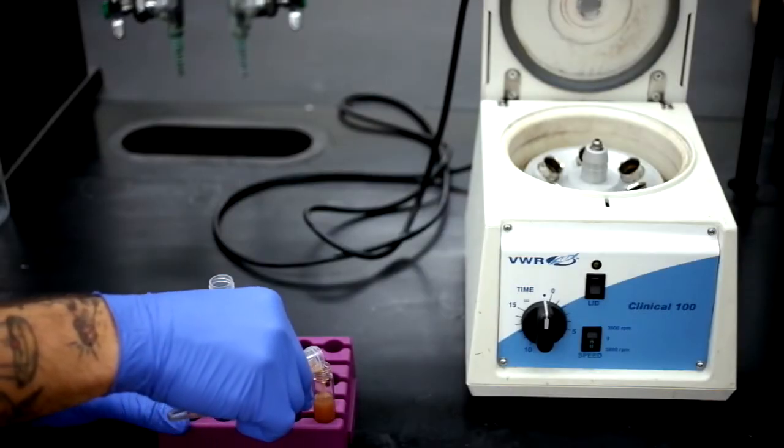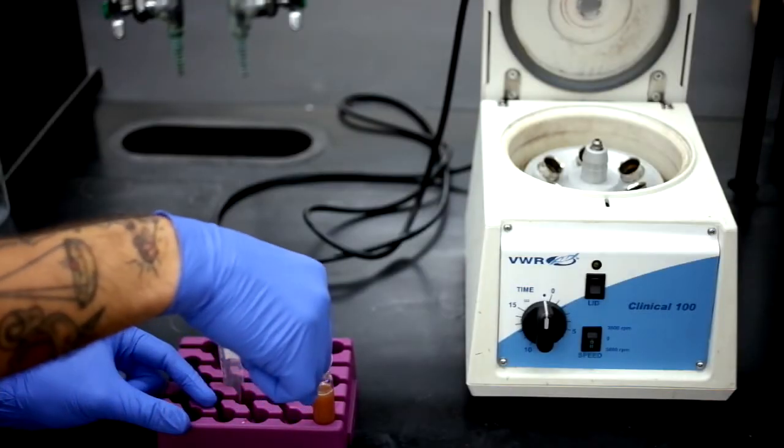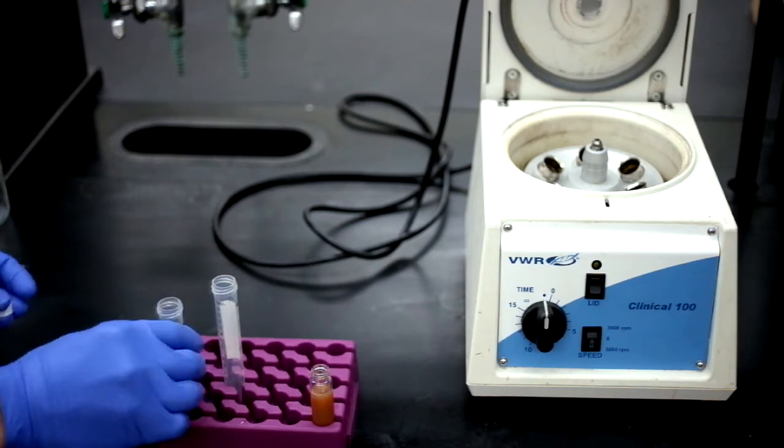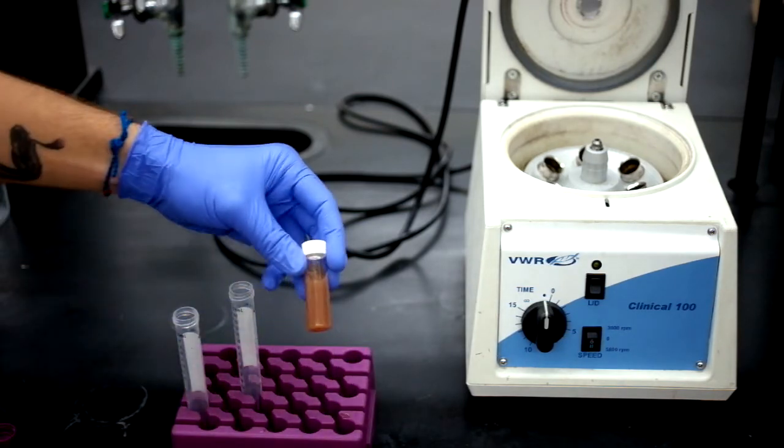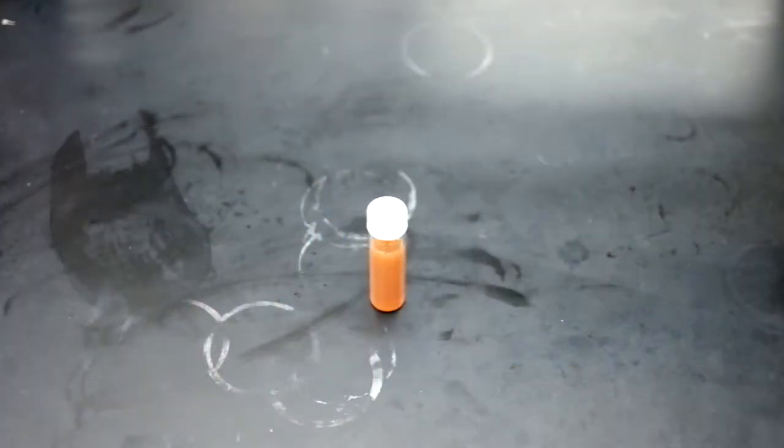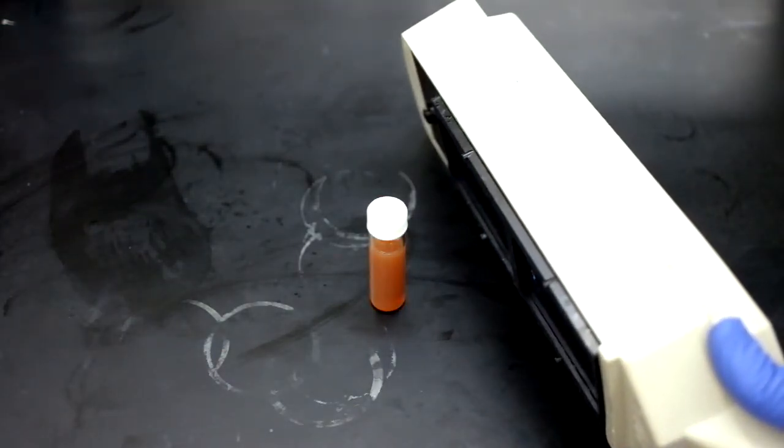We can now store our solution in a closed glass vial at room temperature. The solution may be brown and somewhat transparent, like the one shown in the video, but it may also be oranger and cloudy. If we put the dots under UV illumination, we don't see any fluorescence.